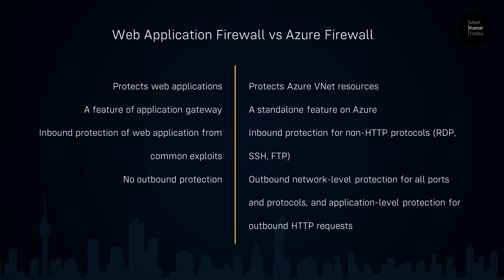Let's understand the differences between web application firewall and Azure Firewall. Web application firewall protects web applications, while Azure Firewall protects Azure vNet resources. WAF is a feature of another Azure service — either application gateway or Azure Front Door — whereas Azure Firewall is a standalone service. WAF supports HTTP or layer 7 protection, while Azure Firewall provides inbound protection for non-HTTP protocols such as RDP, SSH, and FTP, and also has outbound protection features.